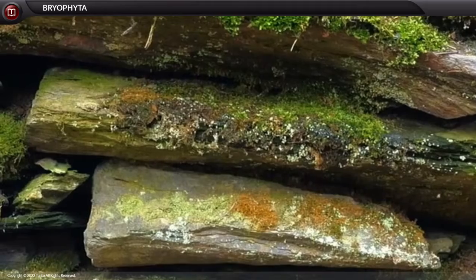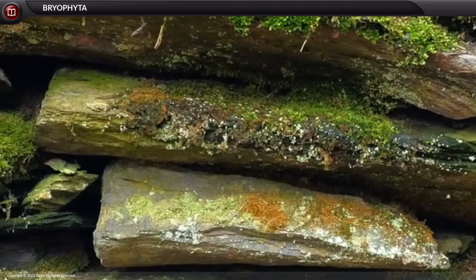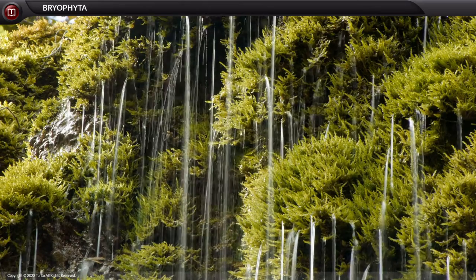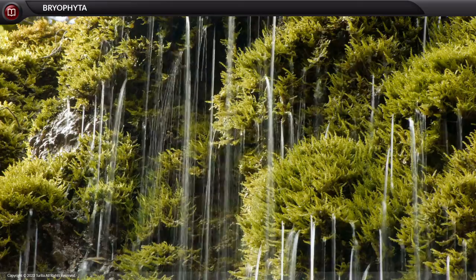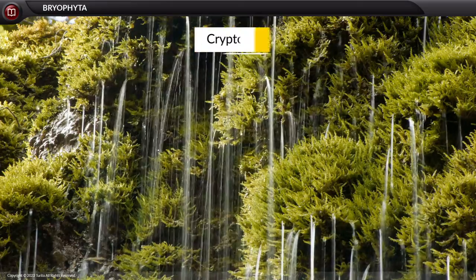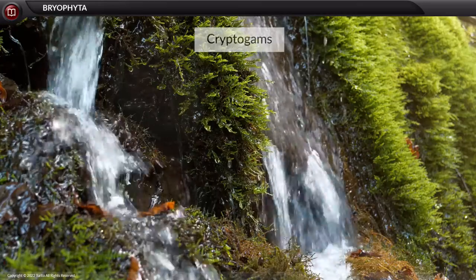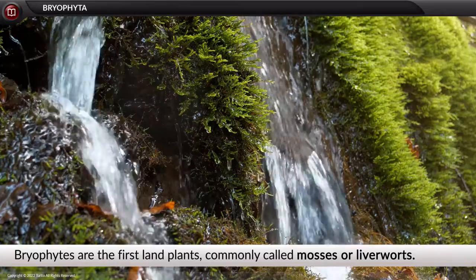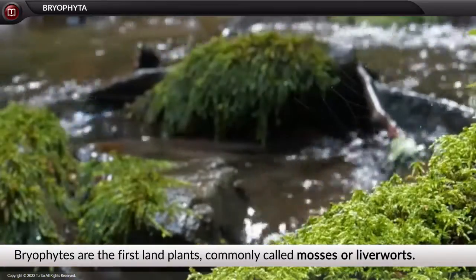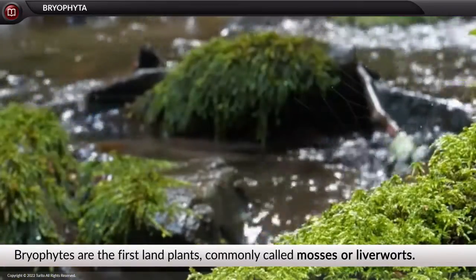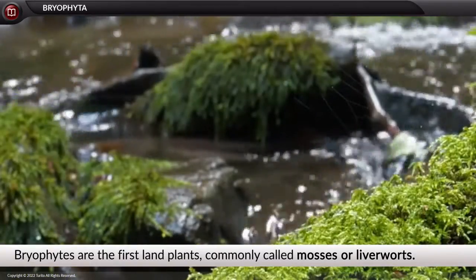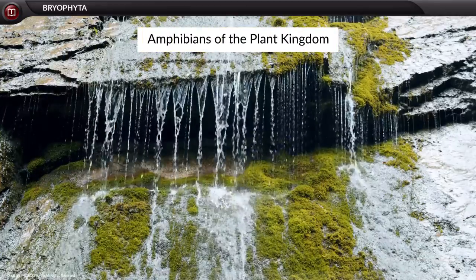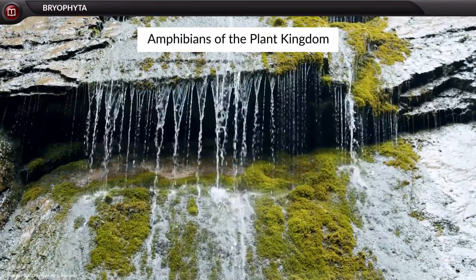In this video we will learn about bryophyta, the second division of the plant kingdom under cryptogams. Bryophytes are the first land plants, commonly called mosses or liverworts. Bryophytes are considered amphibians of the plant kingdom.